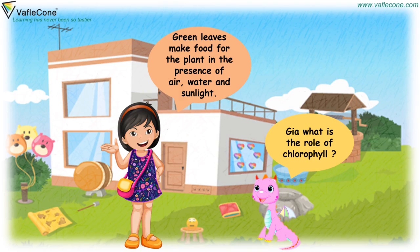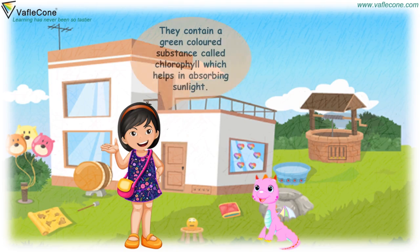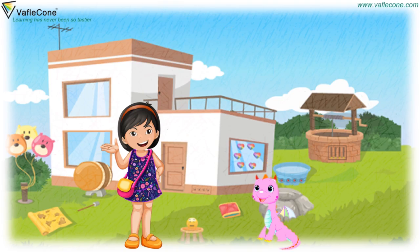Leaves make food for the plant in the presence of air, water and sunlight. They contain a green colored substance called chlorophyll which helps in absorbing sunlight. There are more to learn. Let's go ahead.